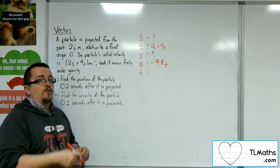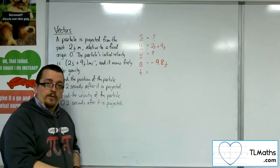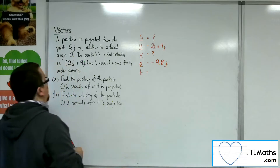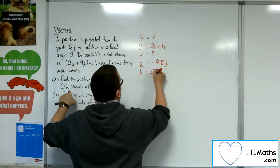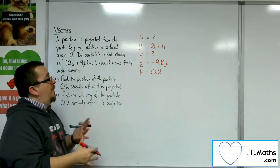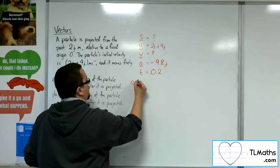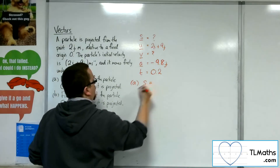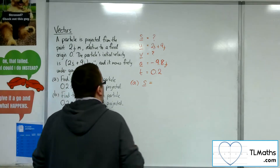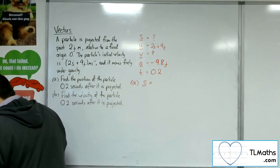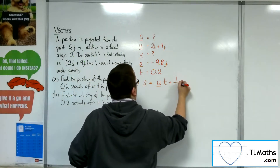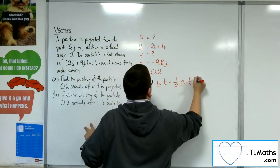So we have gravity working downwards. T is 0.2. We want to find S, so we want the formula without V. That would be s equals ut plus half at squared.